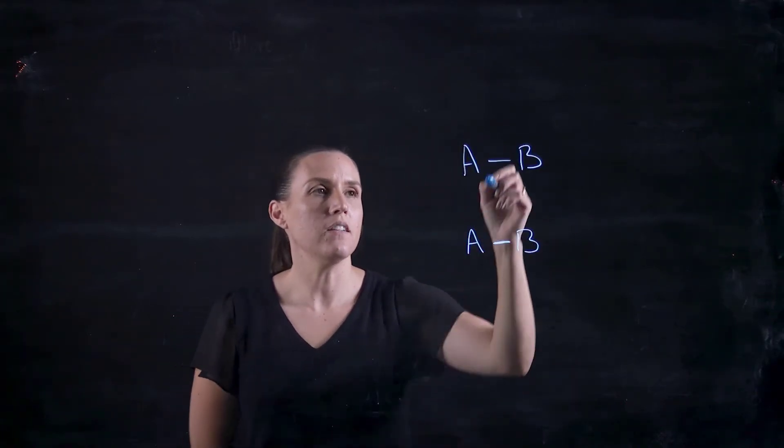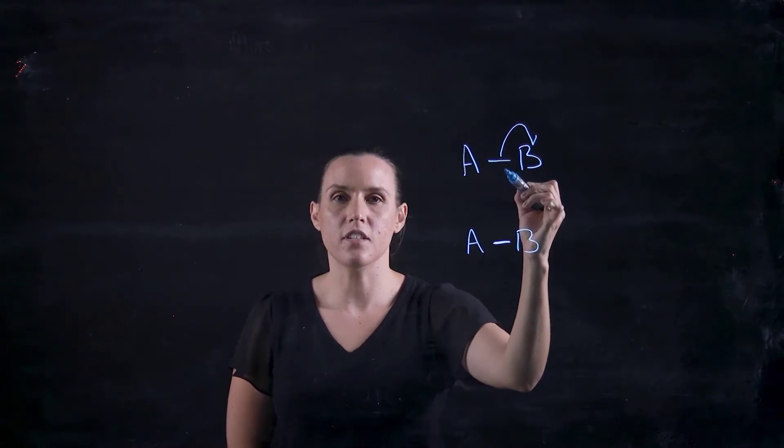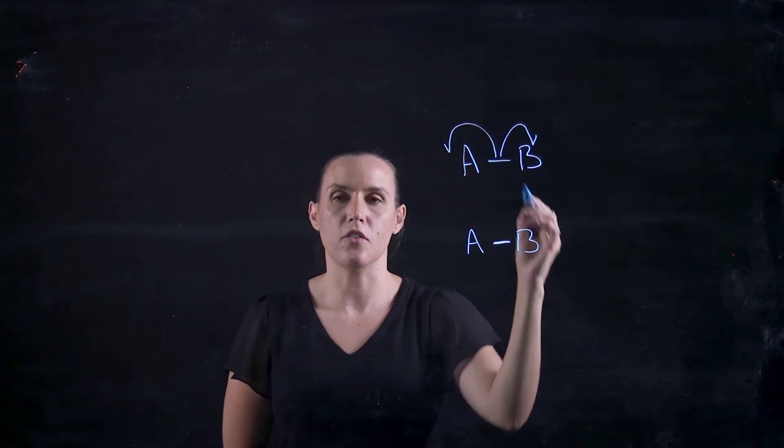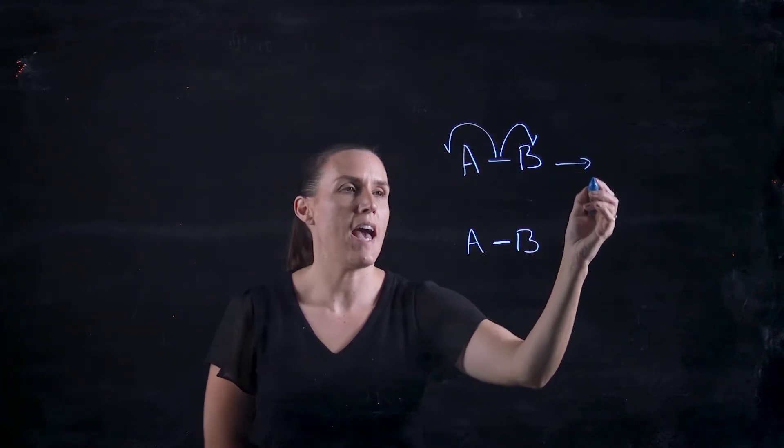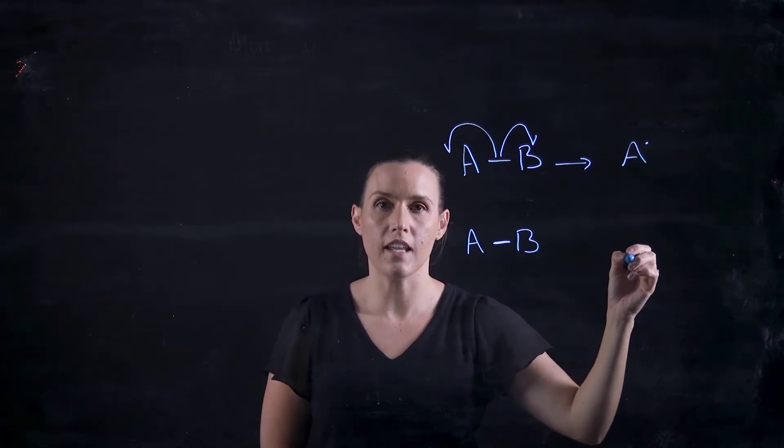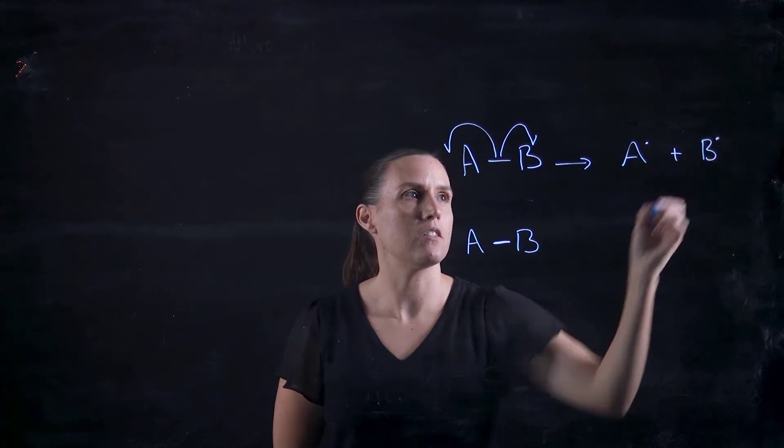So with this top one, let's split this two electrons that are in this bond. One's going to go on to B and the other one is going to go on to A. So what's going to happen is I'm going to produce A with a dot, indicating it's a free radical. It's got a lone electron and B with a dot.